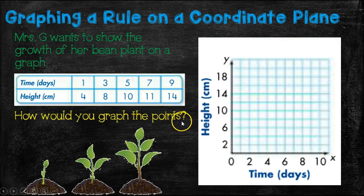So how would you graph these points? Well, let's go ahead and look. So we have time as one day. And in one day, our bean plant was four centimeters high. So we'd go over one because, remember, Mario runs first and then he jumps. And then we'd go up to four. And we'd plot the dot right there. The next one is three and eight. So here's our three. And we're going to go up to eight. And five and ten. And then seven and eleven. And nine and fourteen.